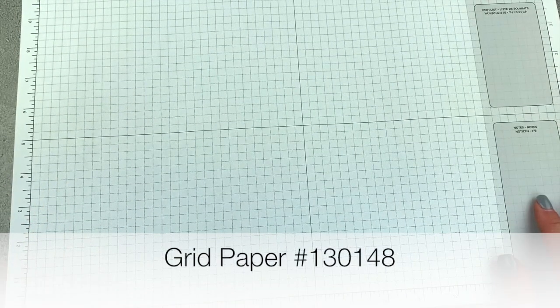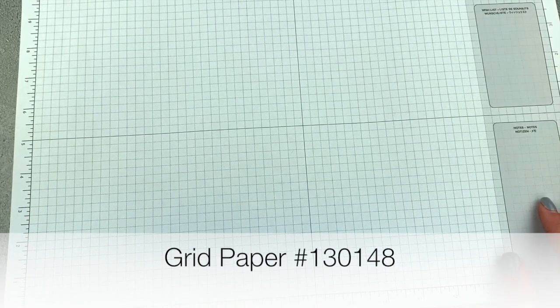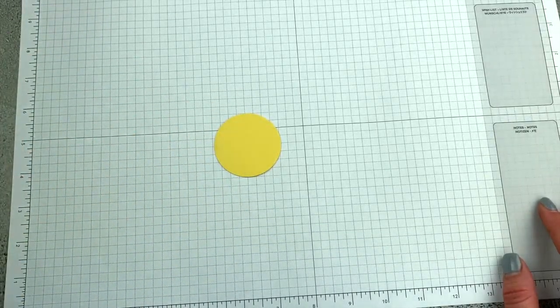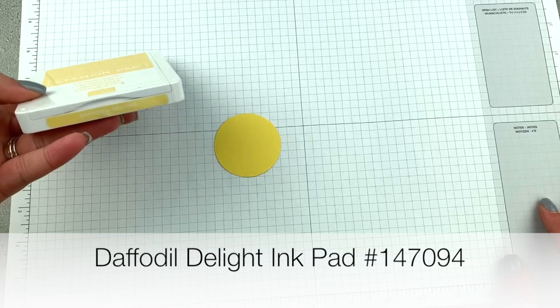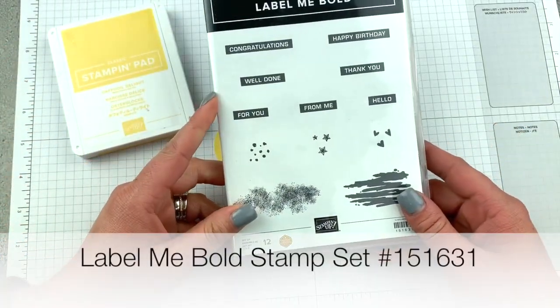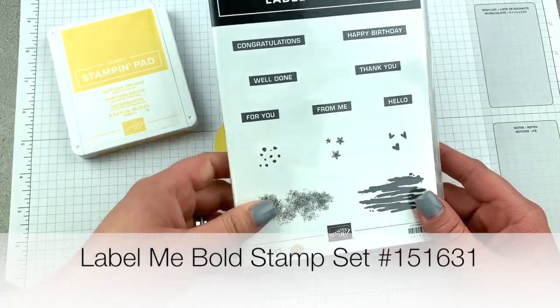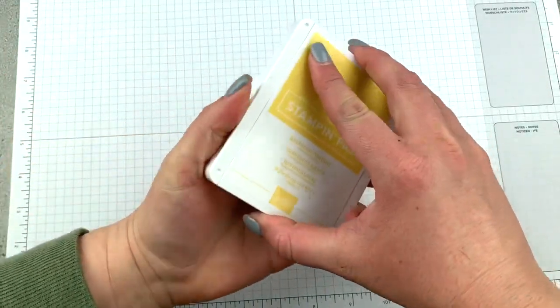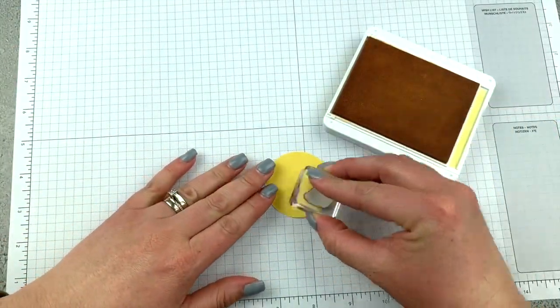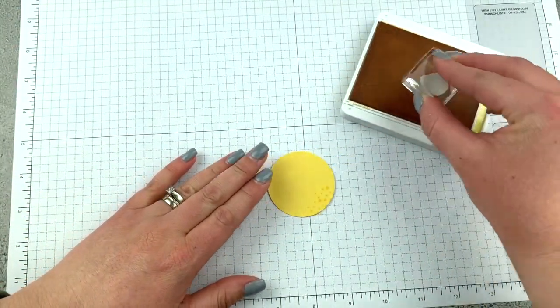I brought in a piece of my grid paper because I want to do some stamping on my circle. I'm going to be stamping with the Daffodil Delight ink pad using Label Me Bold. We're using this stamp right here, and we're just going to stamp all over our circle.